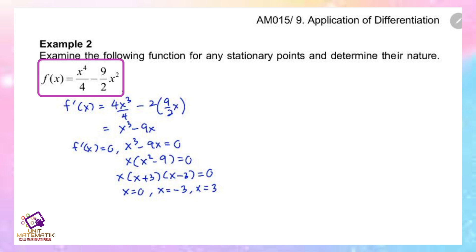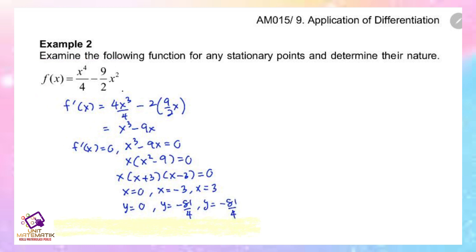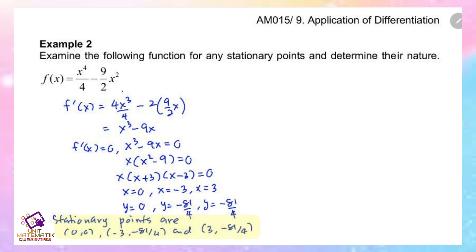When x equals 0, y equals 0. When x equals negative 3, y equals negative 81 over 4. And for the last one, y is also negative 81 over 4. So the stationary points are (0, 0), (negative 3, negative 81 over 4), and (3, negative 81 over 4).